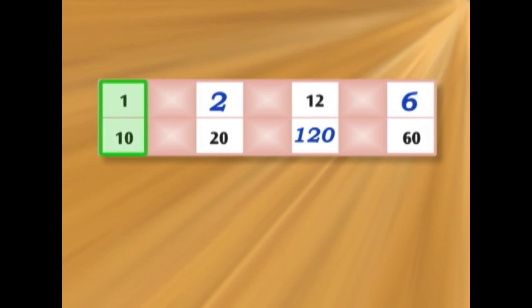So 1 over 10 is the same as 2 over 20, is the same as 12 over 120, is the same as 6 over 60. Because we divide the 12 by 2. Let's try the next one.